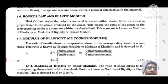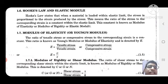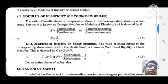Today I am going to discuss about Hooke's Law and Elastic Moduli. Hooke's Law states that when a material is loaded within the elastic limit, the stress is proportional to the strain produced by the stress. This means the ratio of the stress to the corresponding strain is a constant within the elastic limit. This constant is known as modulus of elasticity or Young's modulus.